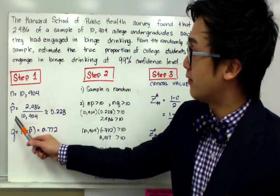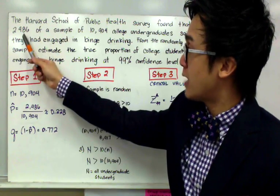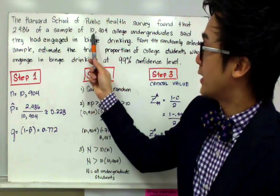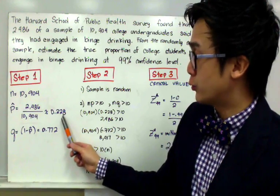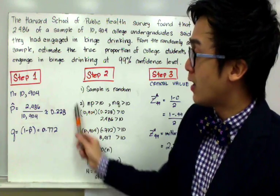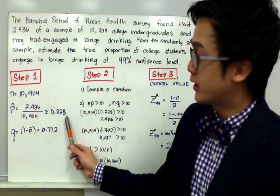Our P hat can be derived by dividing 2,486 by 10,904, which will give us 0.228. So this will be our P hat for our formula in the confidence interval.